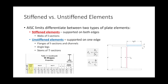The first thing the code does is differentiate between two different types of plate elements found in a given girder: stiffened elements and unstiffened elements. A stiffened element is one supported on both edges — like the web of an I-shape. An unstiffened element is one supported on only one edge — like the outstanding component of a flange. Stiffened elements would be webs of I-sections or channels; unstiffened elements might be flanges, angle legs, or stems of T-sections.